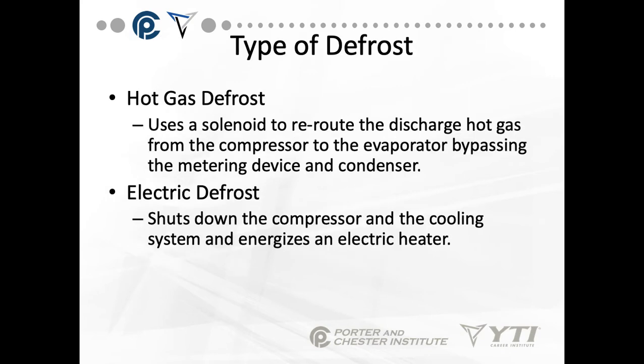We have two different types of defrost. We have hot gas defrost, which uses a solenoid to reroute the discharge hot gas from the compressor to the evaporator, bypassing the metering device and the condenser. We take our very hot discharge gas — coming off the compressor we have a high pressure, high temperature vapor — and we route that around the metering device and the condenser to keep it hot. We bypass the entire liquid line and dump it right into the evaporator, which causes a very high temperature gas in that evaporator, and it actually melts any ice off of it.